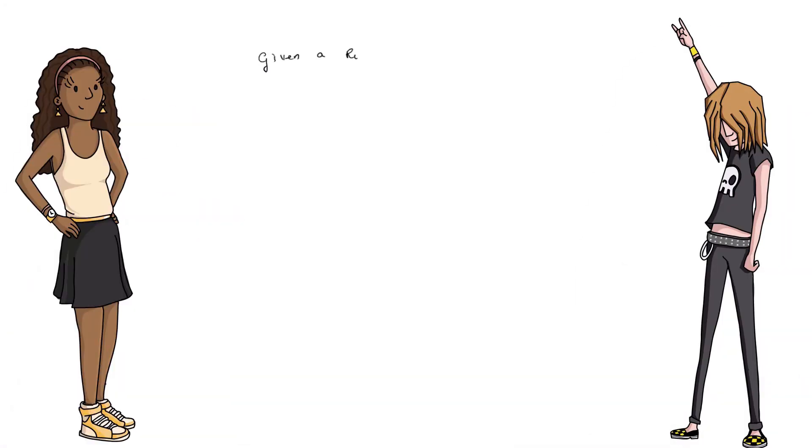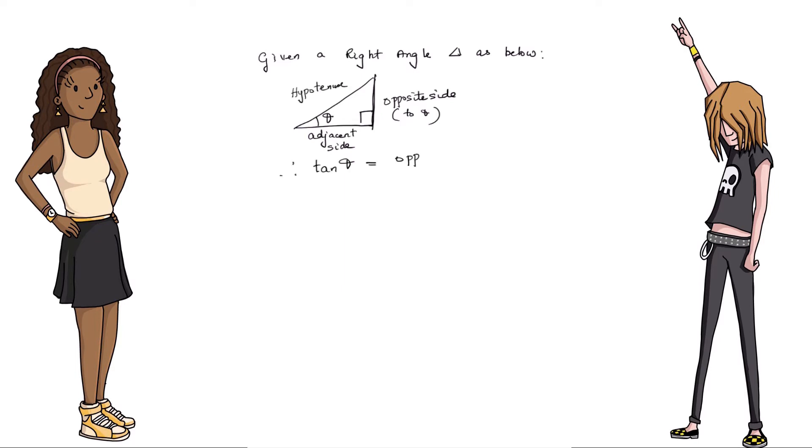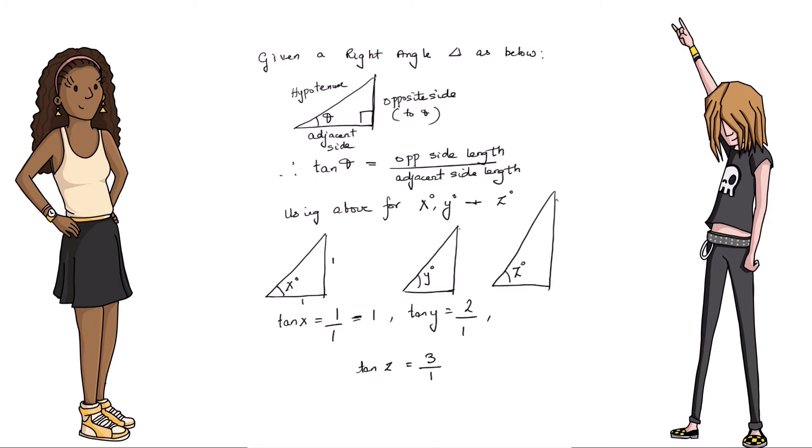One of the approaches you may take makes use of trigonometry. For example we can say the tangent of angle x is the ratio of the opposite side and the adjacent side. Similarly we can find the values of angles y and z in the same fashion. If you are not clear about this concept please refer to the notes.